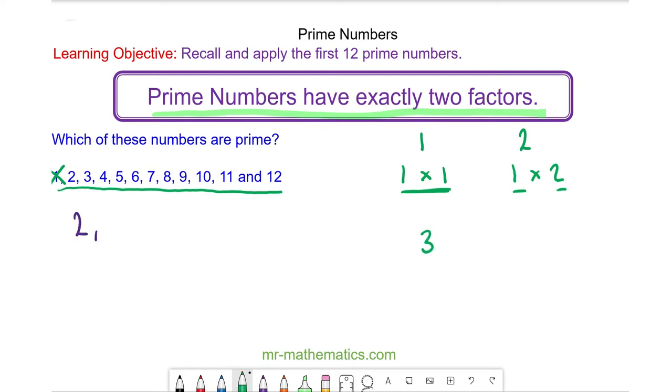The number three again has only two factors, one and itself, so three is also prime. The number four has one times four and two times two, which is three factors, so four is not prime.